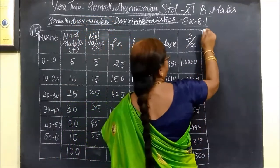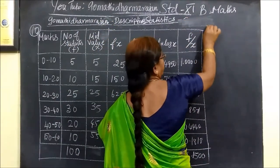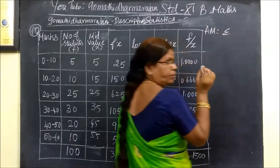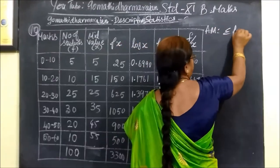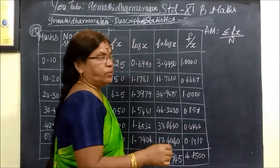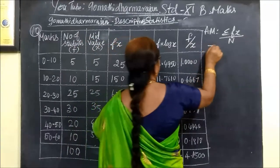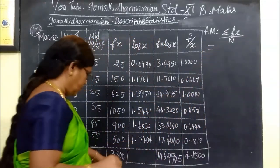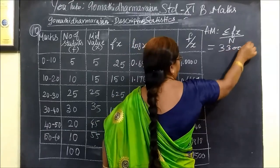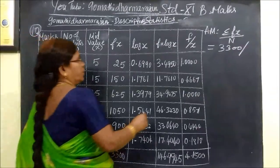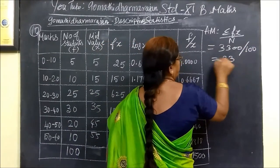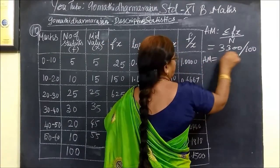The first question is the arithmetic mean. So, arithmetic mean formula: Sigma f x by capital N. Sigma f x, this is frequency variable, you are using capital N. So, equal to Sigma f x is 3300 divided by capital N, which is 100. Therefore, arithmetic mean is 33.